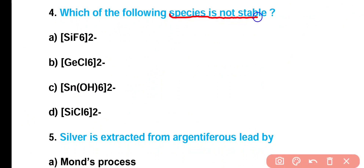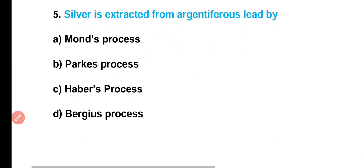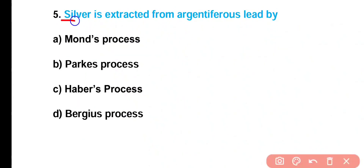Question number 4: Which of the following species is not stable — (A) hexafluorosilicate, (B) germanium hexachloride, (C) hexahydroxystannate, or (D) hexachlorosilicate? Correct answer is option D. Hexachlorosilicate is not a stable species because of steric hindrance developed by the large size of chlorine atoms and small size of the silicon atom.